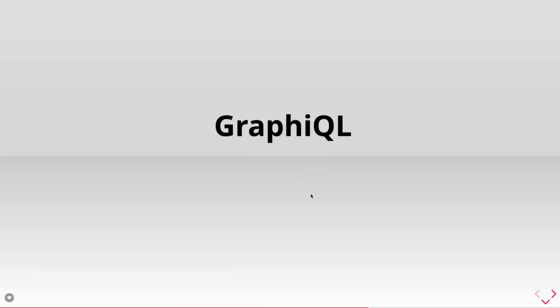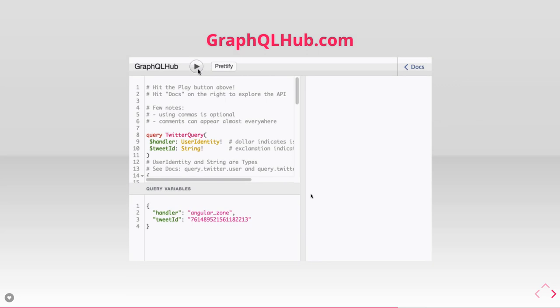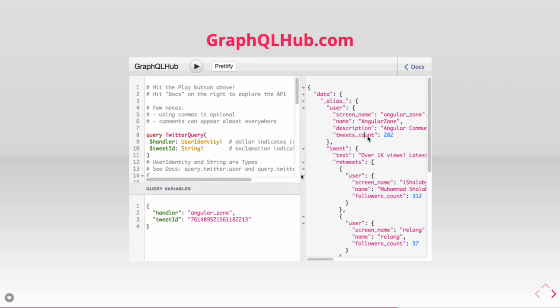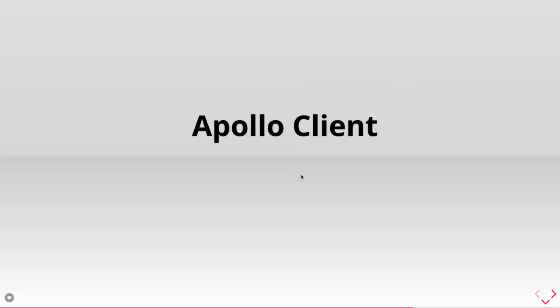GraphiQL is a web interface or portal through which you can execute queries and mutations against the GraphQL server. You write a GraphQL query there, it goes as an HTTP POST to the GraphQL server, and the server responds with the data. Once you've set up the GraphQL backend using Apollo server, on the client side — since we're not writing REST — you can't just make an Axios or fetch call. You need to create a client instance to make queries and mutations. Query means fetching data from the GraphQL server; mutation means updating or creating a record — changing the state.